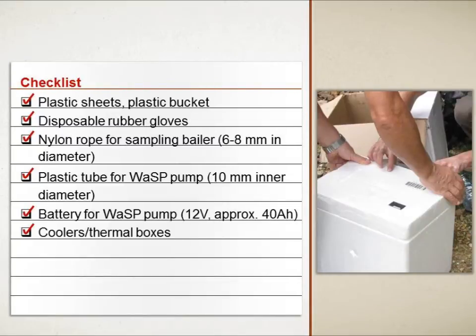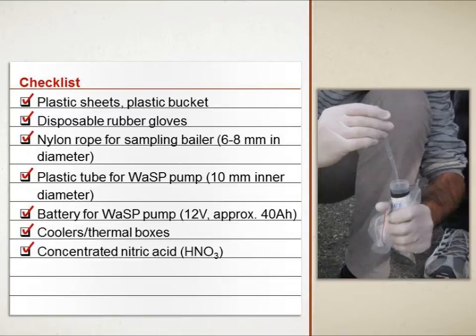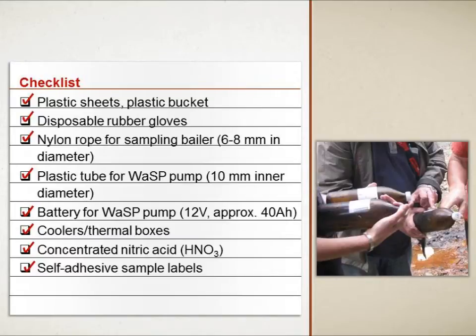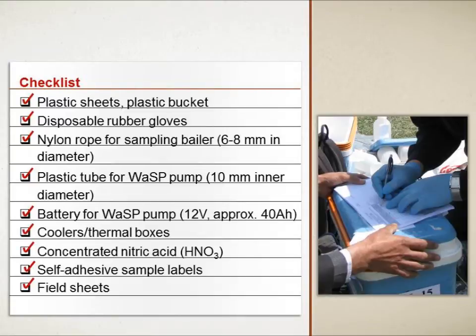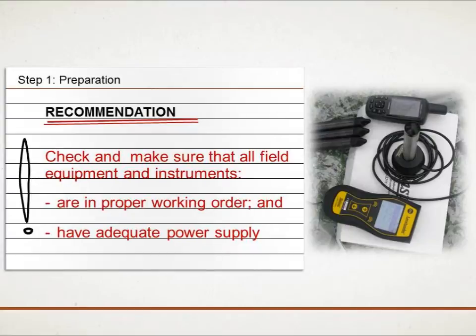Coolers and thermal boxes for storing and protecting samples. Concentrated nitric acid for preserving groundwater samples for metals analysis. Adhesive tape for labeling samples. And field sheets for all wells. The laboratory will provide sampling containers and required acids to ensure that the containers remain clean. All field equipment and instruments should be checked beforehand to make sure that they operate according to specifications and have adequate power supply.